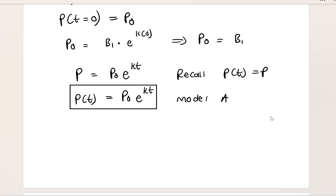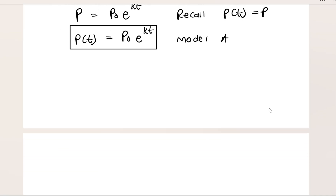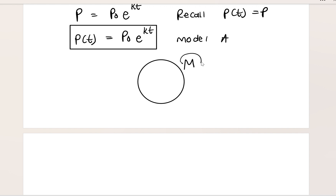In the next lessons, we will consider models that include carrying capacity. The population doesn't just increase forever — there's some limit. If the population exceeds that bound, you may end up with problems of food, shelter, medication, and so on. There's something called M, which we'll define as carrying capacity, and we'll see in the next lesson how to include it in our model. Thank you for watching.